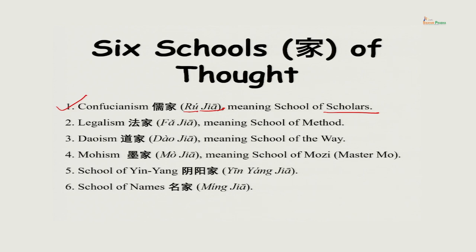The second important school of thought is Legalism, which Sima Tan calls Faachiya — school of method. Fa means method. This school emphasizes not on the person but on rules and regulations — that is why Western scholars call it Legalism, because it emphasizes rules and regulations, rewards and punishments. The first emperor Shi Huangdi was a follower of the Legalist school and used Legalist methods to defeat all other kingdoms during the Warring States period and establish the Chinese empire under the Qin dynasty.